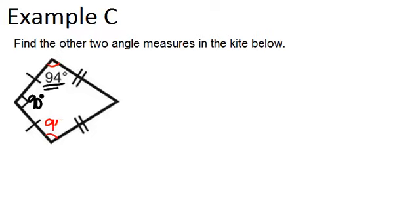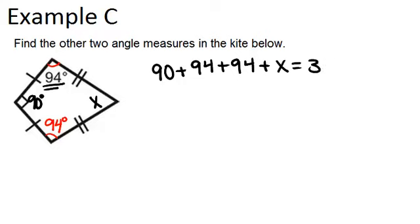So that means this angle is also 94 degrees. The last thing that we need to remember is that the four angles in any quadrilateral add to 360 degrees. So if I call this angle x, I can add up 90 plus 94, plus 94 again, plus x equals 360 degrees, and solve that for my missing angle.